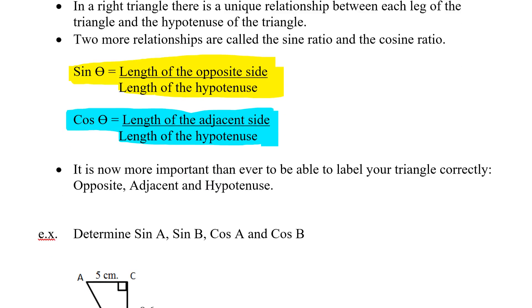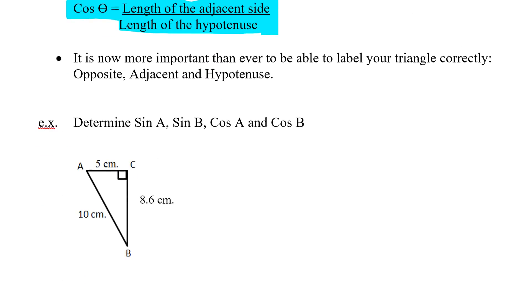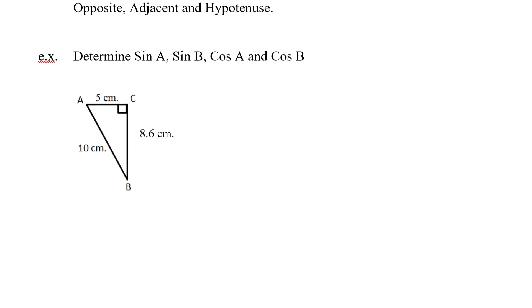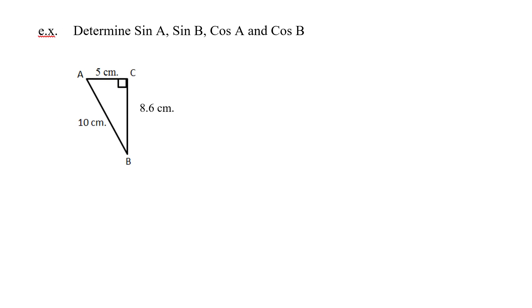We're going to look at this in a very similar way that we did the tan ratio. Before we actually go solving, we're going to find out what the sine of A is, what the sine of B is, what the cos of A is, and what the cos of B is. So this exercise allows us to label the triangle and pull out the right information in order to solve.